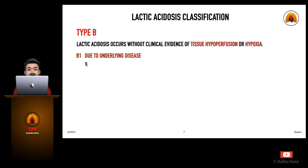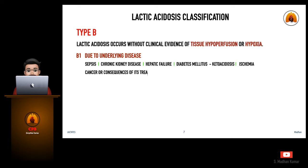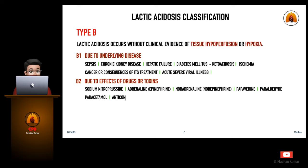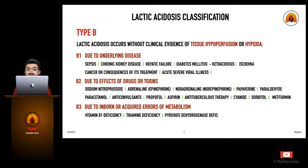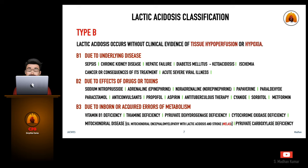Type B lactic acidosis is defined as not associated with tissue hypoxia or hypoperfusion. It is subdivided into Type B1, due to underlying diseases like sepsis, chronic kidney disease, hepatic failure, diabetes, ischemia, cancer, and acute severe viral illness; and Type B2, due to the effects of drugs or toxins like sodium nitroprusside, adrenaline, noradrenaline, and papaverine.